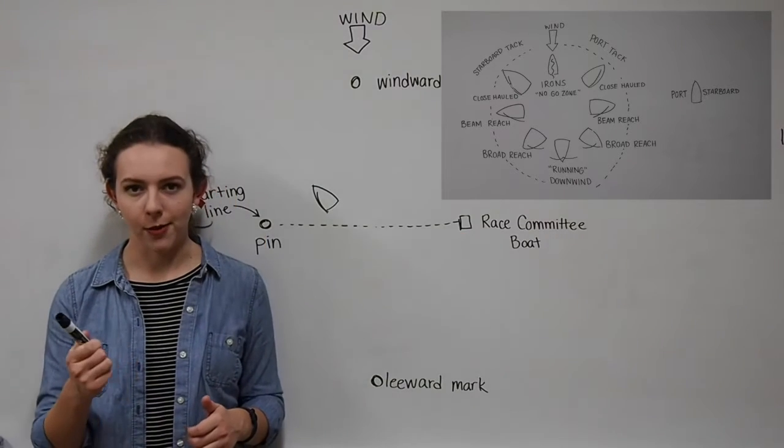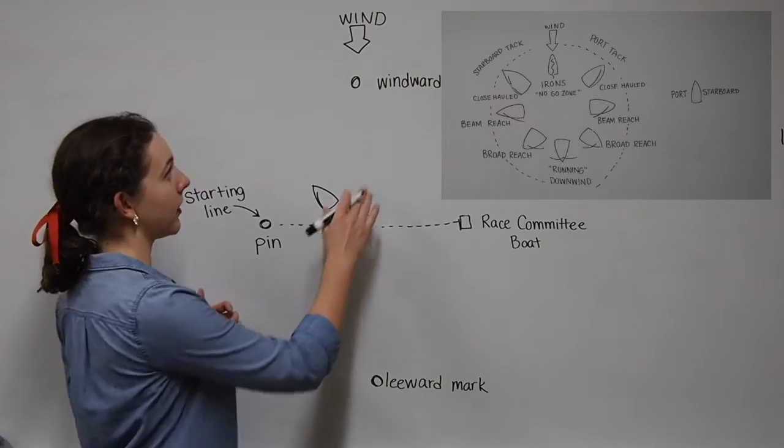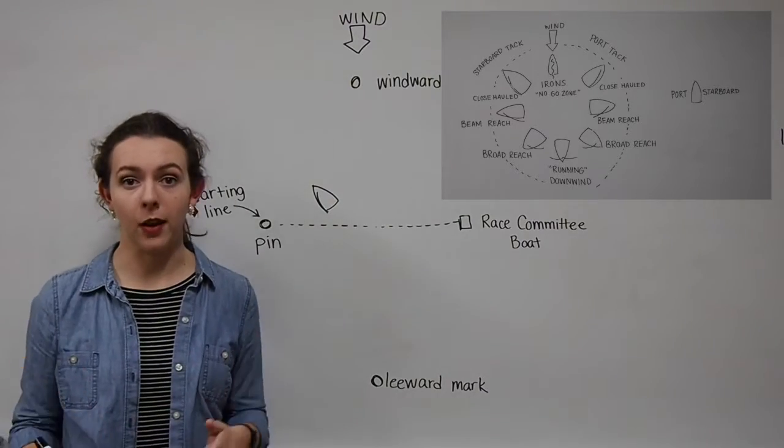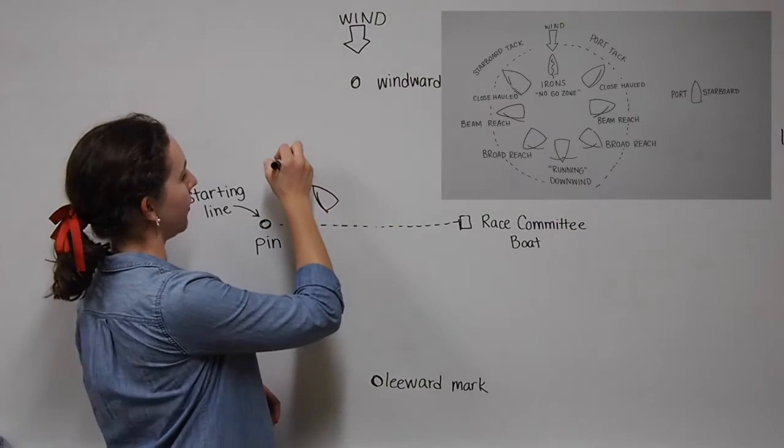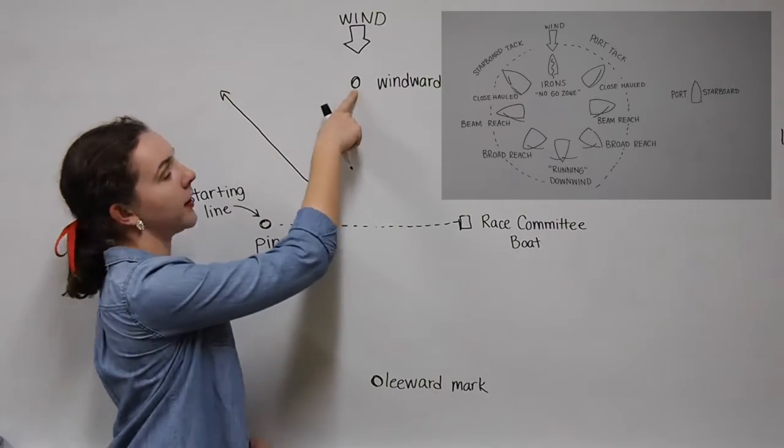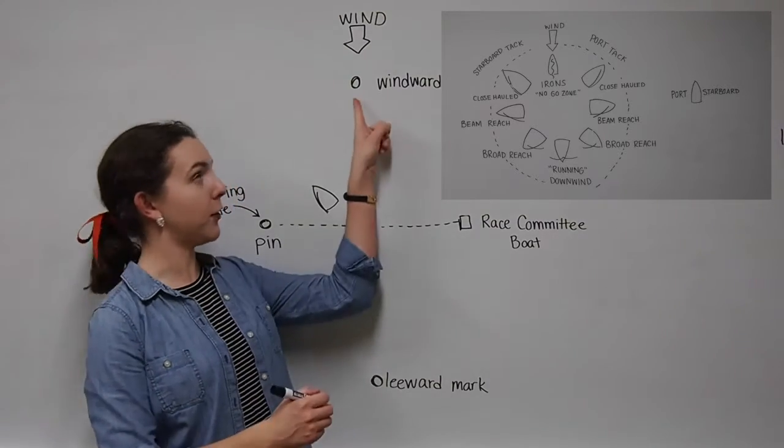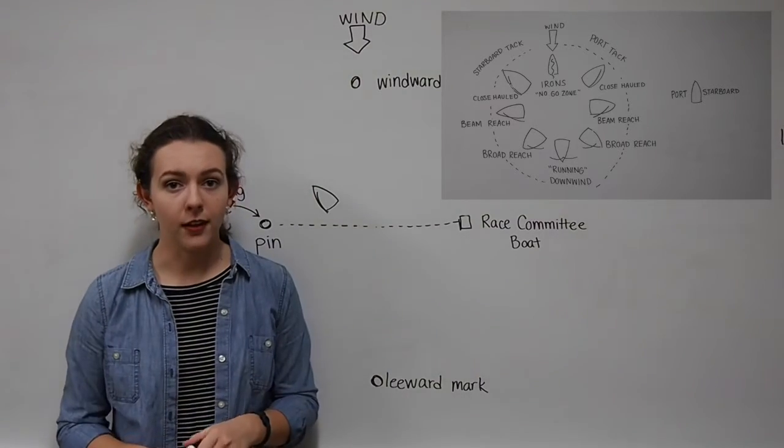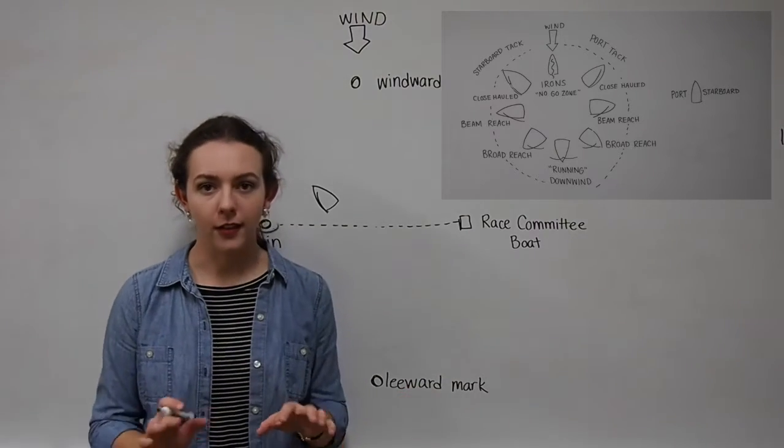In the last video, I briefly mentioned how the two close-hauled positions are what are needed to advance up into the direction that the wind is coming from. Right now, we are on a starboard close-hauled tack, but as you can see, if we keep going in this direction, we will never get here. So what this boat will need to do is tack back and forth to reach their destination, alternating between a starboard tack close-hauled and a port tack close-hauled. But it's going to look like a zigzag.